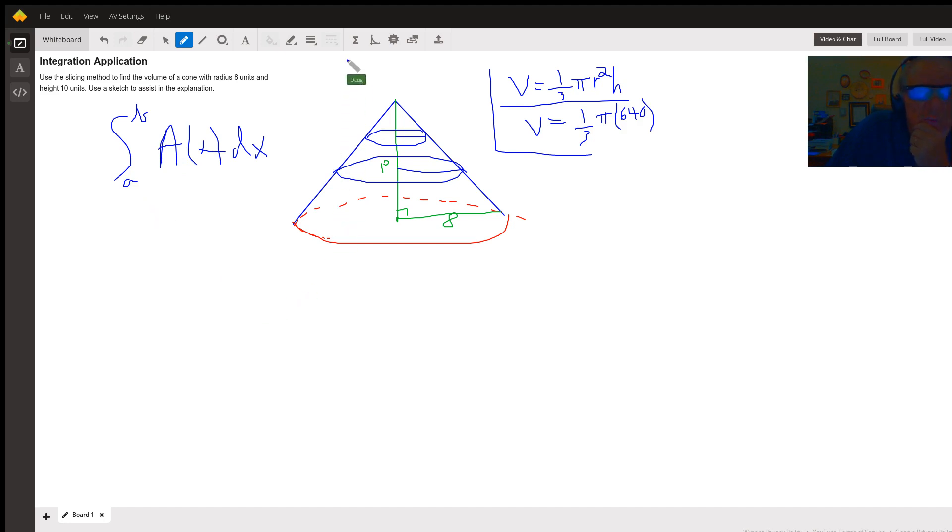And that integration is what actually does the addition. So the question is what kind of formula can we come up with for the area of one of these typical circles? Well, this distance right here we could call h and this distance right here we could call r.